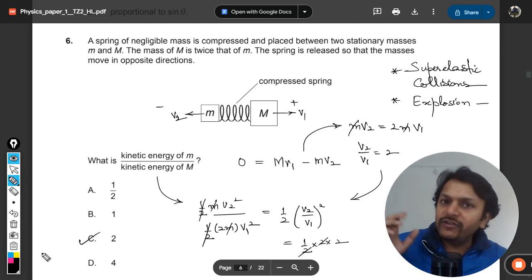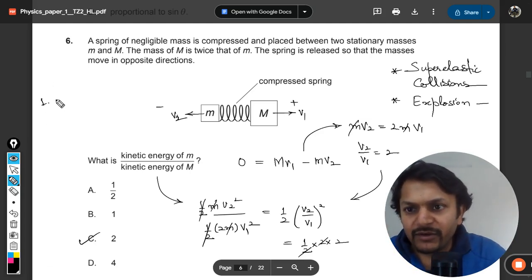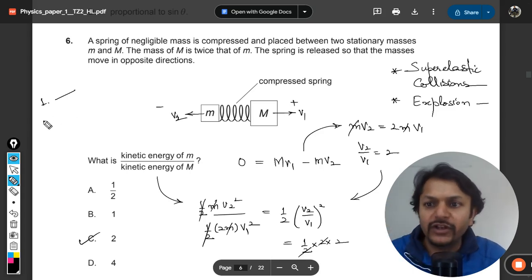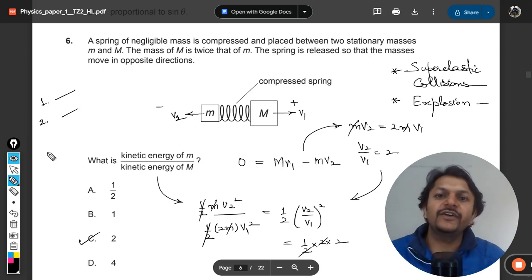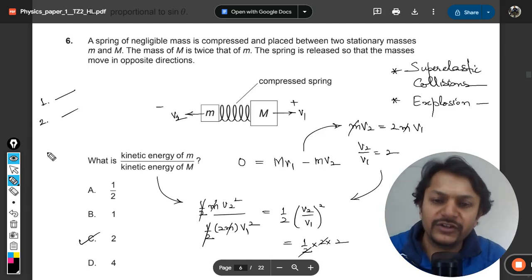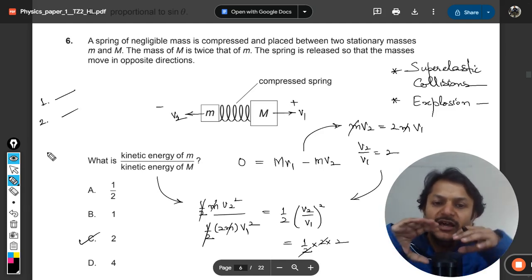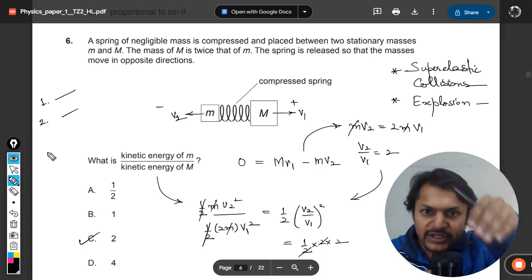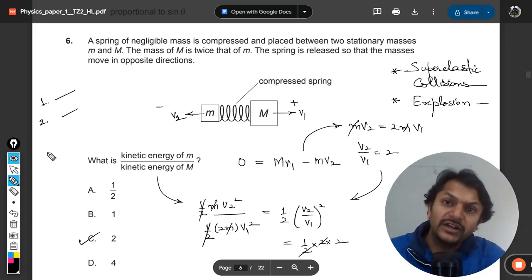This is how we do this question. Number one, we have applied the principle of conservation of linear momentum, we found the ratio of the velocities. Then we go for conservation of energy principle. The kinetic energy is coming out of this, so it is compressed earlier. There is a potential energy which is given into this spring that is converted into the masses.